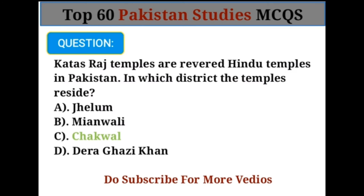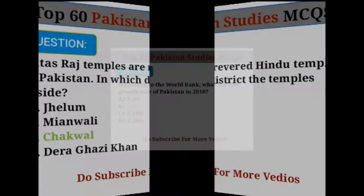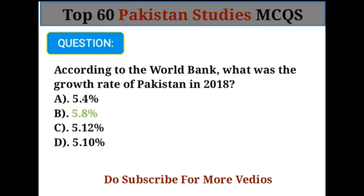Katas Raj temples are revered Hindu temples in Pakistan. In which district do these temples reside? Option C: Chakwal. According to the World Bank, what was the growth rate of Pakistan in 2018? Option B: 5.8 percent.